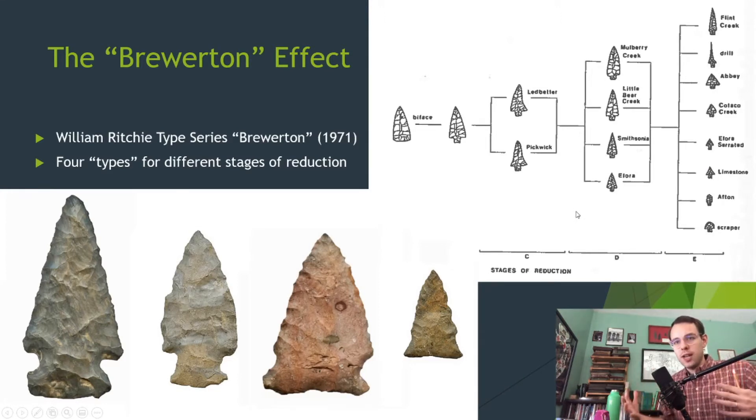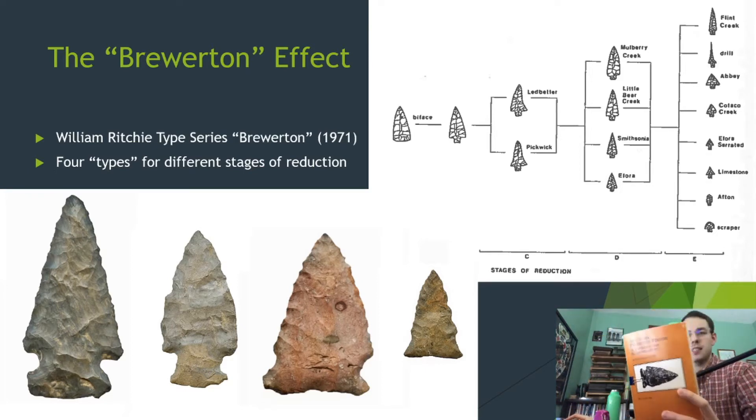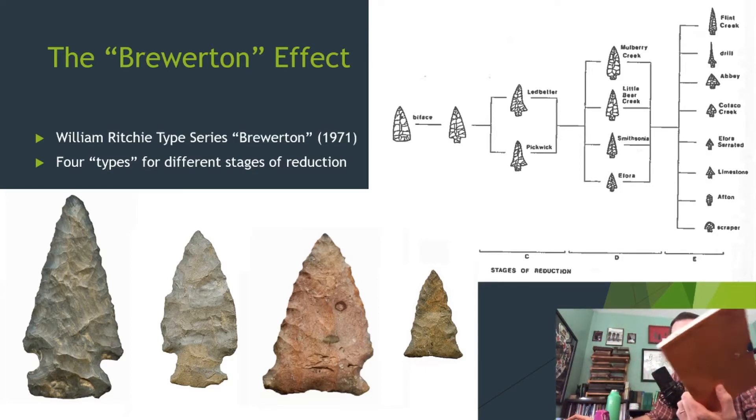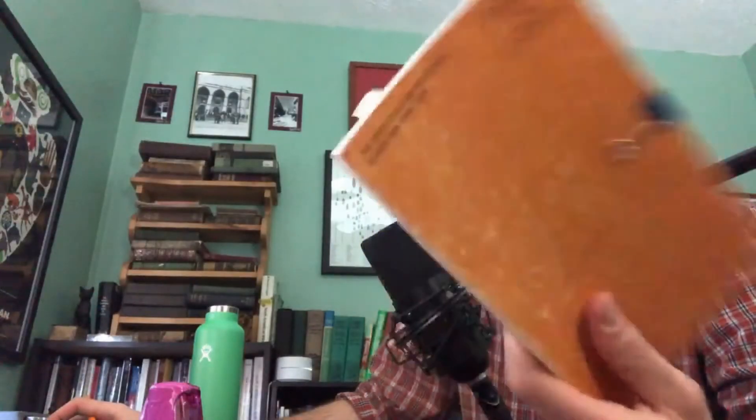This is where the Brewerton Effect really comes into play. It's a specific circumstance from a specific projectile point type, first defined by William Ritchie in the 1960s and 1970s. This is actually a copy of the New York State Museum's Bulletin in Archaeology — you can pick it up on Amazon. Inside, as is typical for projectile point typologies, they just have pictures of the points. And unfortunately, this is how a lot of archaeologists do chronological dating — they'll find a projectile point at a site, flip through, and say 'ah yes, it looks like this picture, therefore it must be this time period,' without any critical analysis or understanding of the complexities of the Brewerton Effect.